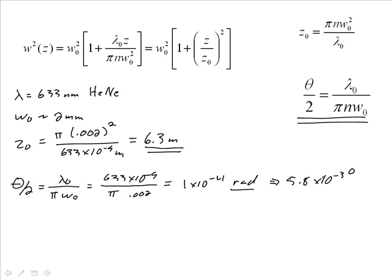Notice that if I double the size of my waist, w nod, my angle halves. And if I double the size of my waist, z nod goes up by w nod squared. So z nod goes up by 4. So with a w nod of 4 millimeters, z nod jumps up to about 25 meters of distance. Let's do one more calculation here before we call it a day.